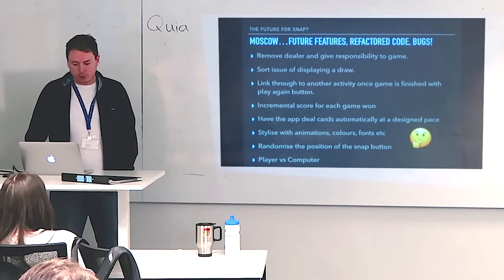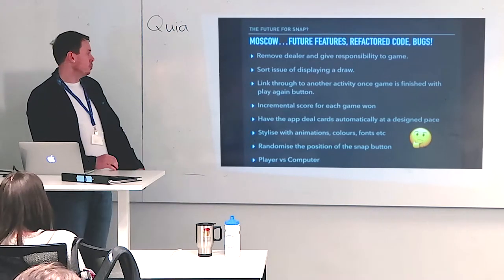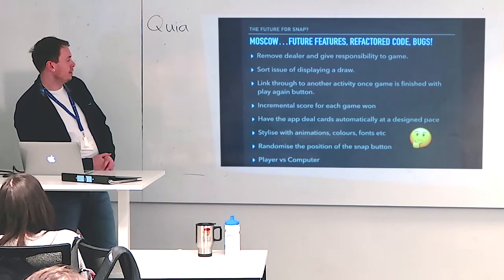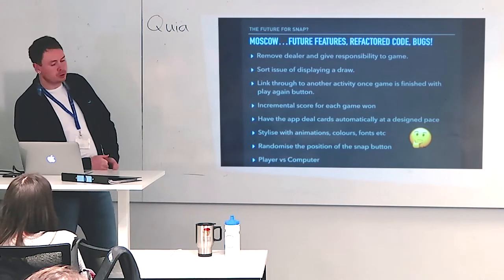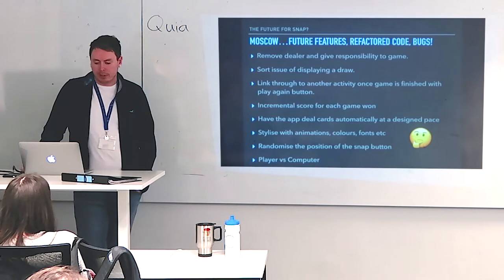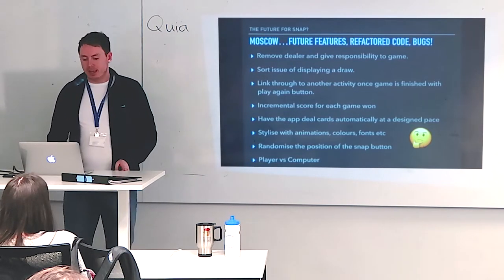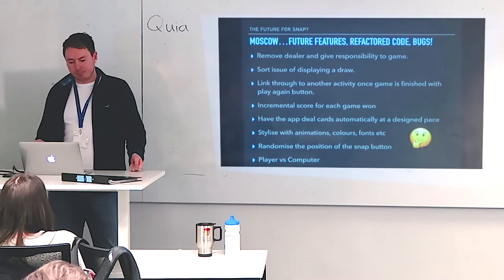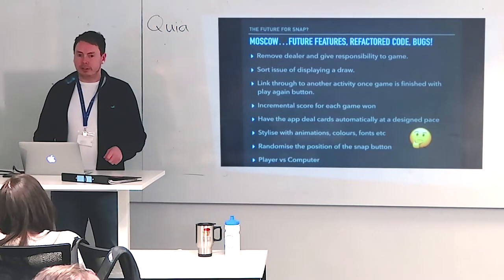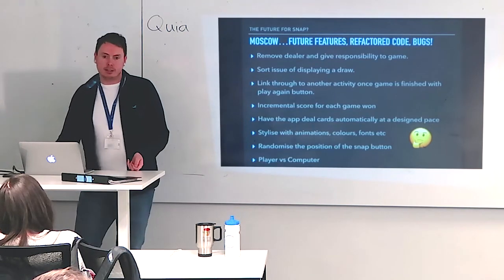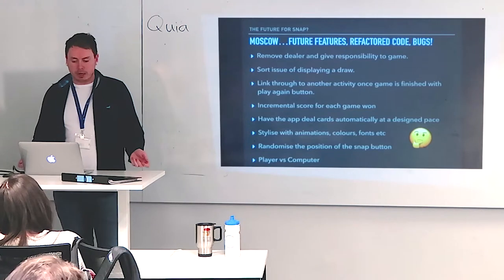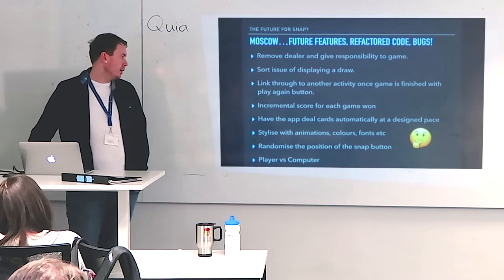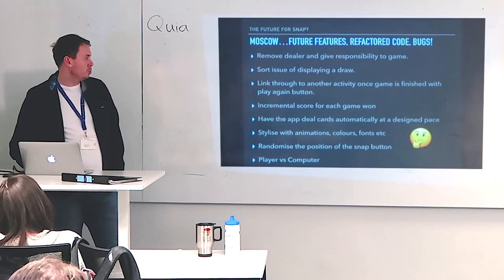MoSCoW and future features, factoring in code bugs. I wanted to remove the dealer class — I have one at the minute, but it became apparent later that it didn't really need to exist and the responsibility could be given to the game class. There's also the issue of displaying a draw: at the moment, if I keep playing player one and player two and nobody snaps, when we get to the last card one person plays it and it automatically assumes the other person is the winner. That's not the case in real life — you need to wait to see if the last two cards played are a match so a player can snap and get some cards back. I've not been able to get that working in the UI yet, though it works in my tests.